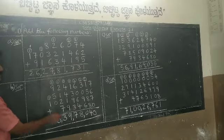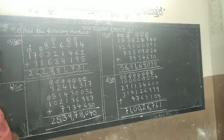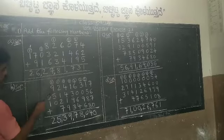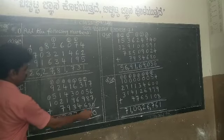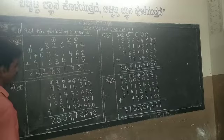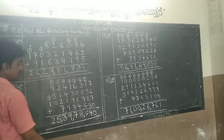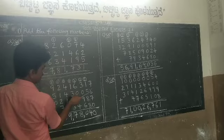Write the classwork neatly in your CW book. For homework, write two problems in the homework match number book. In the B question, there are 4 sets of numbers given that you have to add. Start from the ones place. The digits in the ones place are 7, 6, 7, and 0.